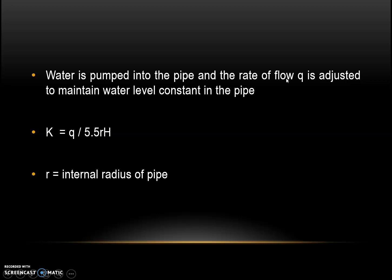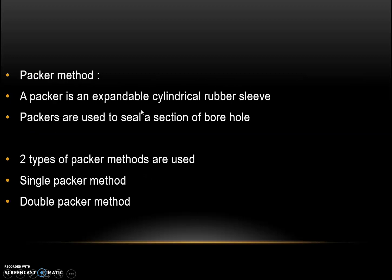Water is pumped into the pipe and the rate of flow Q is adjusted to maintain water level constant in the pipe. K is found out using formula K equal to Q divided by 5.5R into H, where R is the internal radius of the pipe.